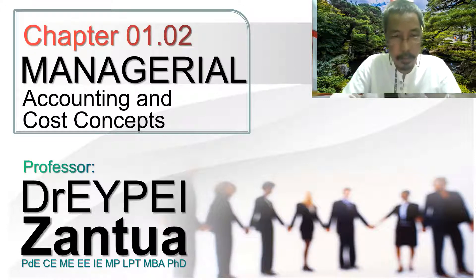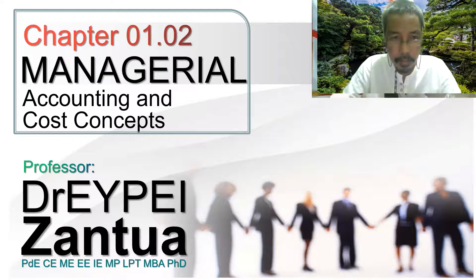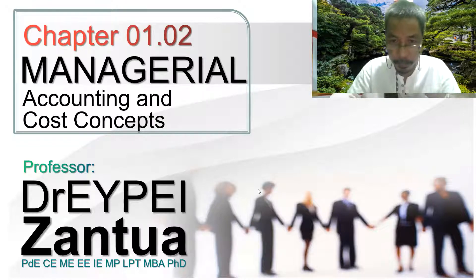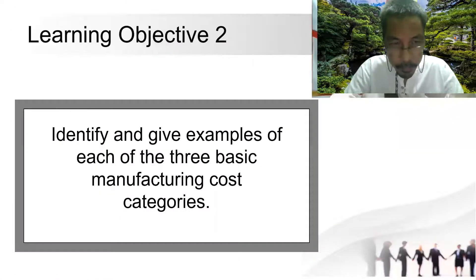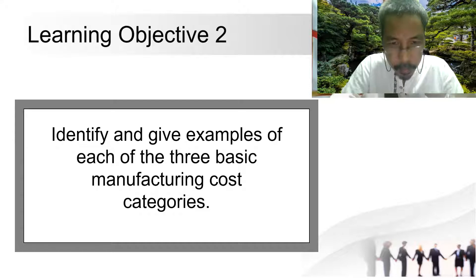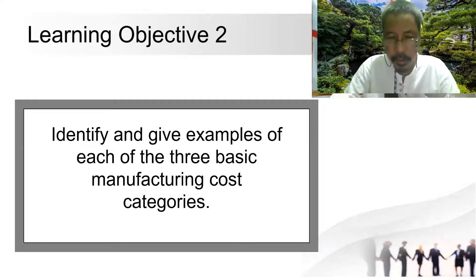This is Chapter One, and let's take a look at Module Number M01.02, Digital Accounting and Cost Concepts. We have Learning Goal Number Two: identify and give examples of each of the three basic manufacturing cost categories.